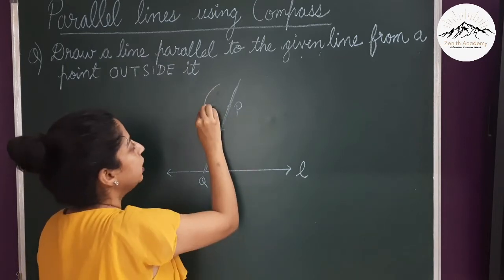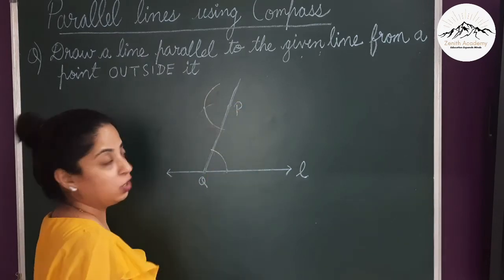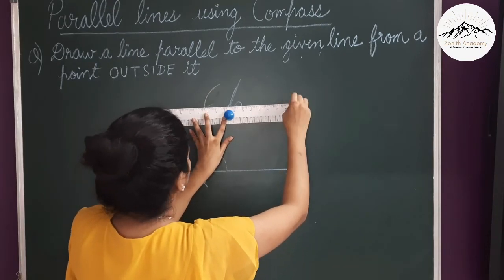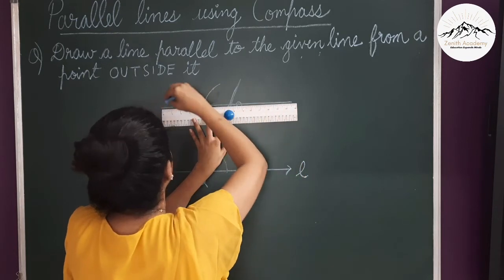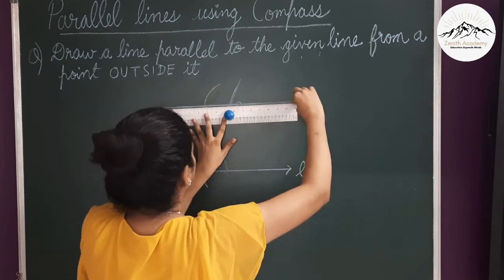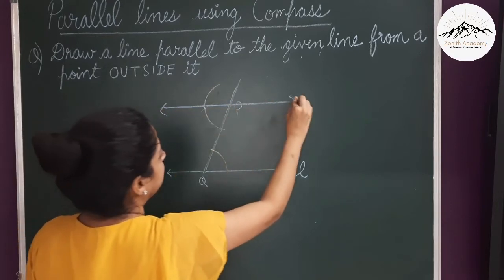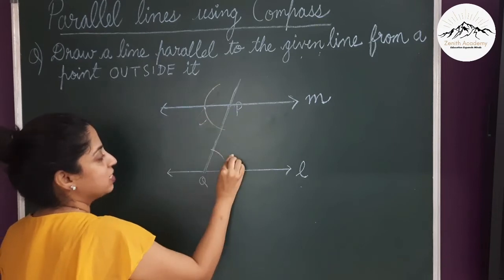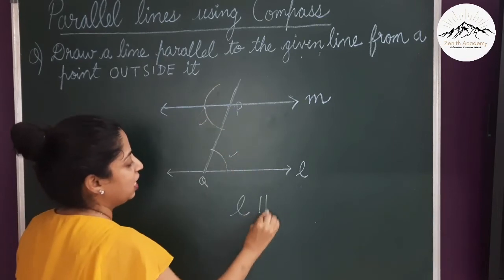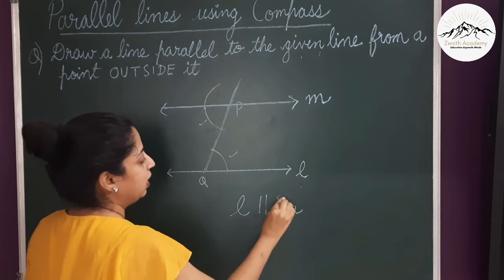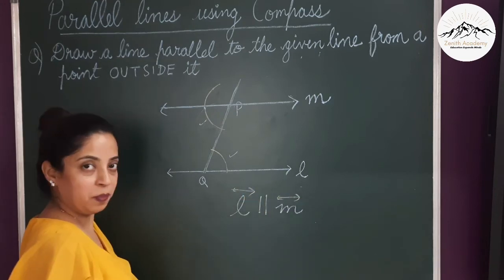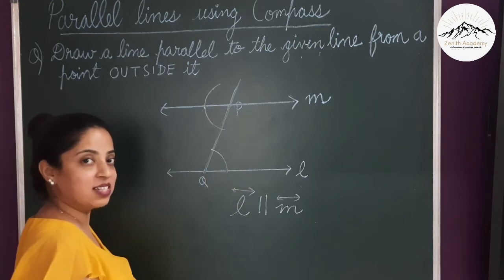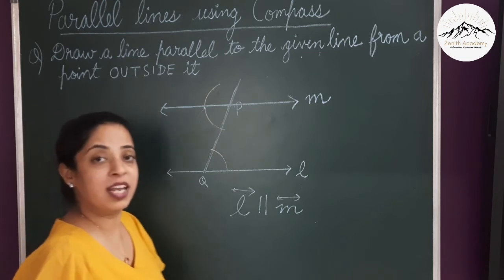Now simply join this intersection point and point P to make a parallel line. This line M is parallel to L since these two alternate interior angles are equal. So line L is parallel to line M. Here we drew the alternate interior angles equal to construct the parallel line.